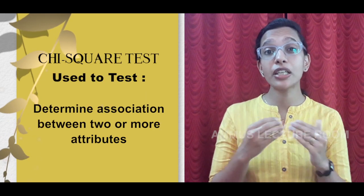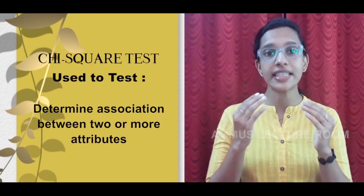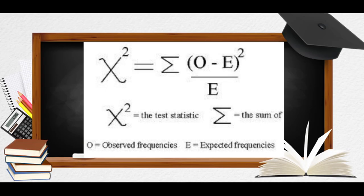We will discuss the two attributes of the chi-square test. The test statistic is equal to the sum of observed frequency minus expected frequency, the whole square divided by expected frequency.